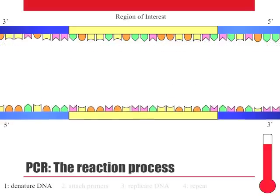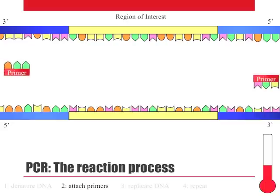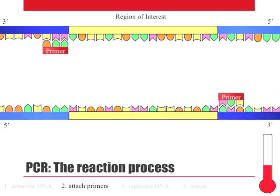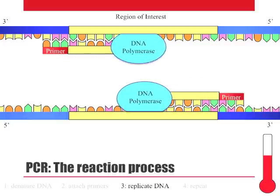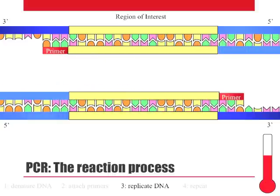Once the DNA has separated, the temperature must be decreased again to promote the binding of our primers to the DNA sequence. Once they have been given an opportunity to bind, we will increase the temperature again to accommodate the activity of our DNA polymerase, which replicates all the DNA downstream of our primers. In PCR, a special type of DNA polymerase is used that can withstand the temperature increase required for DNA denaturing without itself denaturing.